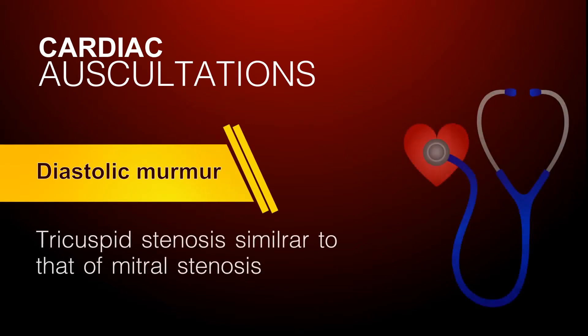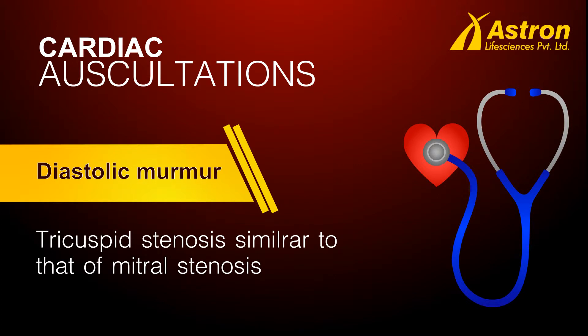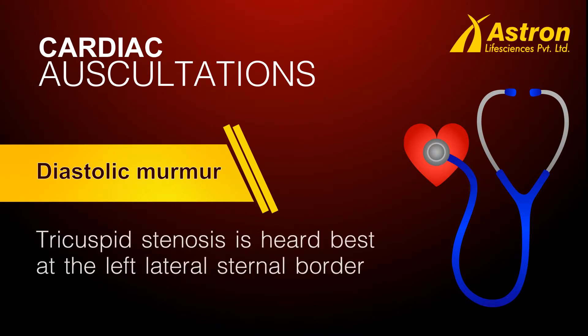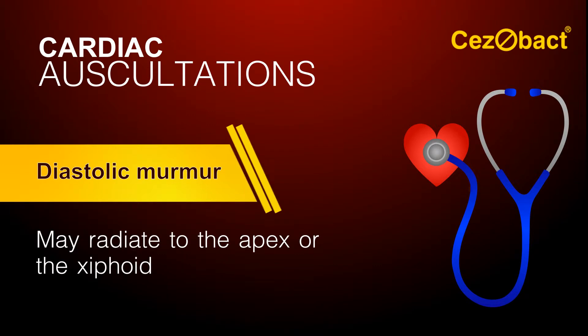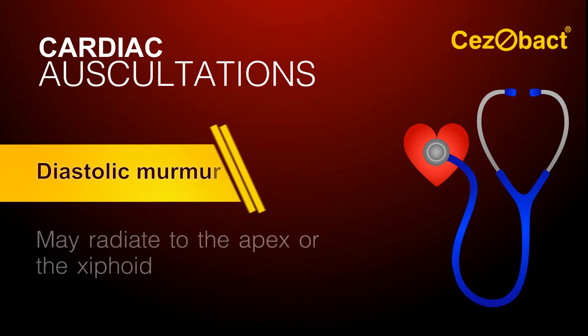The diastolic murmur of tricuspid stenosis is similar to that of mitral stenosis, except that it is heard best at the left lateral sternal border and may radiate to the apex or the xiphoid.